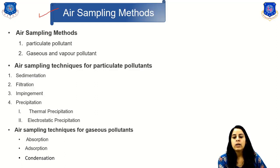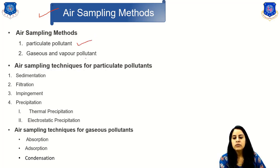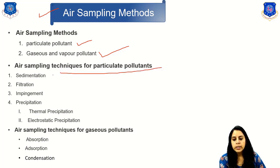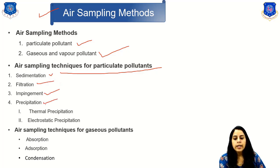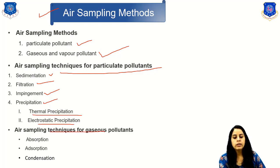The next topic is the air sampling method. For sampling, there are two categories: one is for particulate pollutants and the second is for gaseous and vapor pollutants. The air sampling techniques for particulate pollutants include sedimentation, filtration, impingement, and precipitation — with precipitation having two types: thermal and electrostatic. For gaseous pollutants, there are three methods: absorption, adsorption, and condensation.